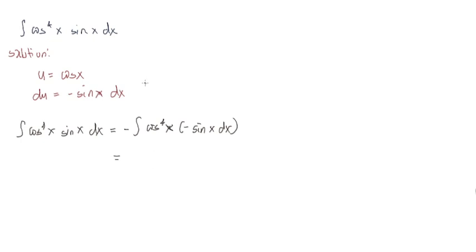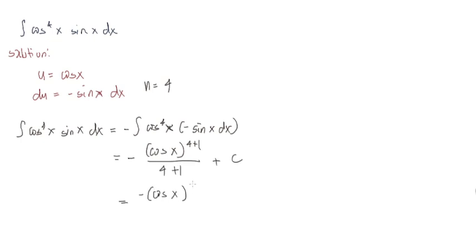By inspection, n equals 4. Applying the power formula, we get negative times u to the n plus 1 over n plus 1 plus C, which gives negative cosine x raised to the power of 5 over 5 plus C. We can write this as negative cosine to the fifth x over 5 plus C, and this is our answer.